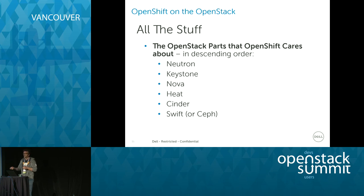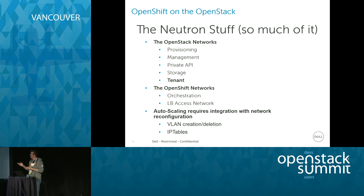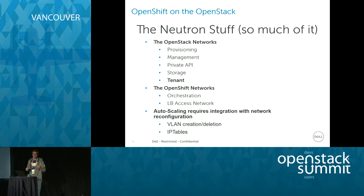OpenShift is built to talk to any SDN product — it comes with a basic SDN product which is really OpenVSwitch. The APIs allow calling out to any SDN product to reconfigure the network. So integrating the Neutron API into OpenShift calls is what I'm working on right now. Our typical OpenStack networks include a provisioning network, management network, private OpenStack API network, storage network for Ceph or Swift or Cinder, and tenant networks. With multiple tenants in OpenShift all working on the same VM, we have a real namespace issue and a networking issue.